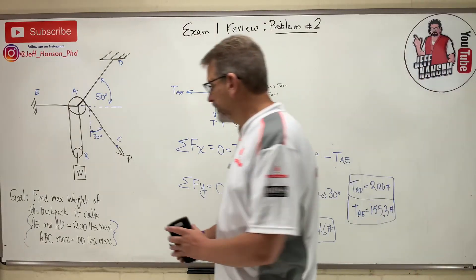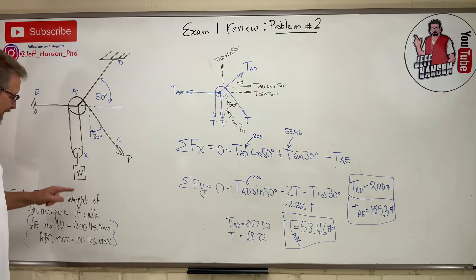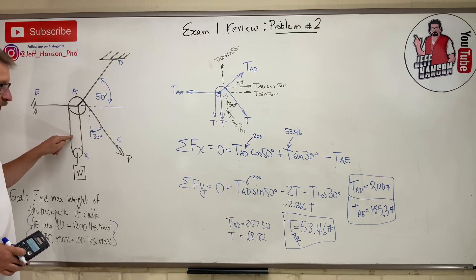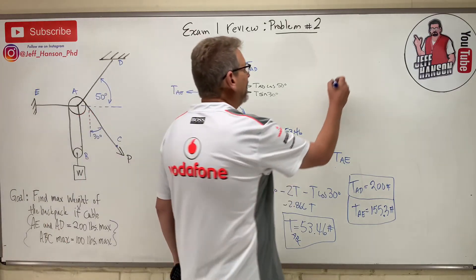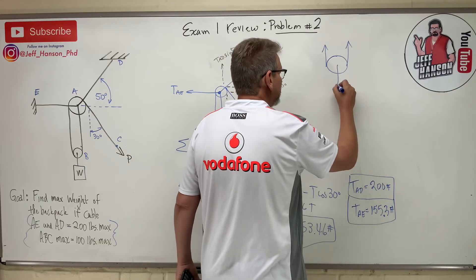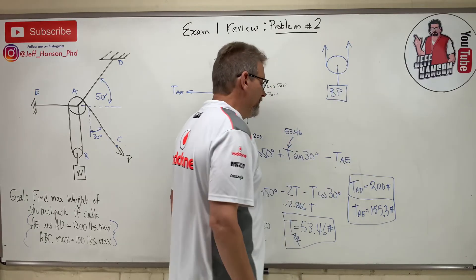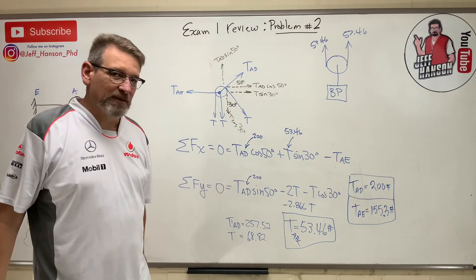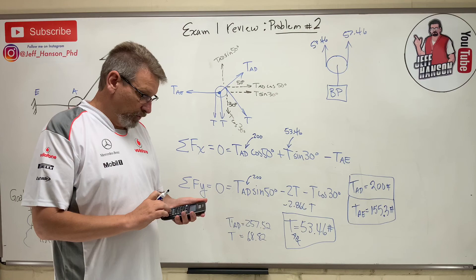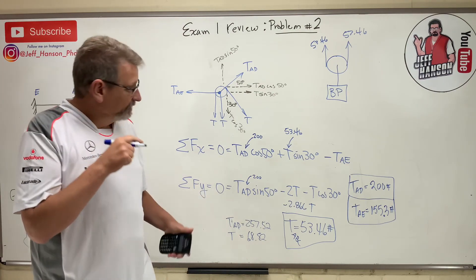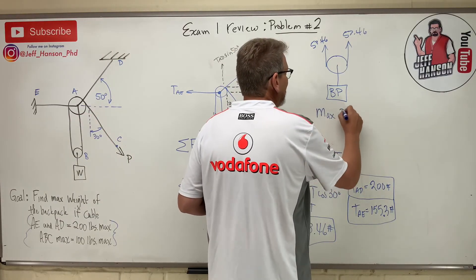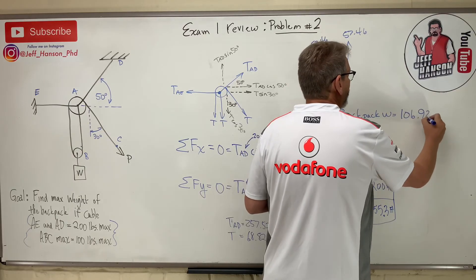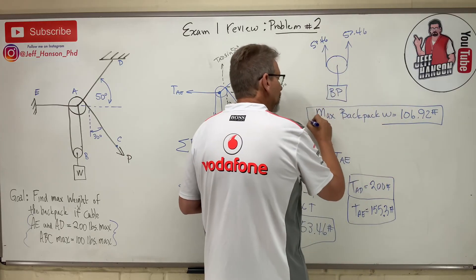Now we answer the actual question: what does the backpack weigh? The tension in the rope holding the backpack is T = 53.46 pounds. The backpack has two rope segments pulling up on it. Sum of forces in Y: 53.46 + 53.46 − W = 0, so the maximum backpack weight is 53.46 × 2 = 106.92 pounds.